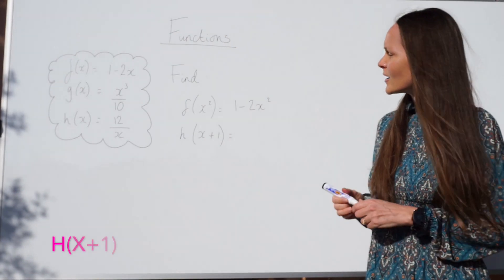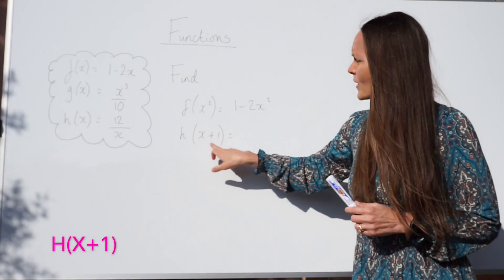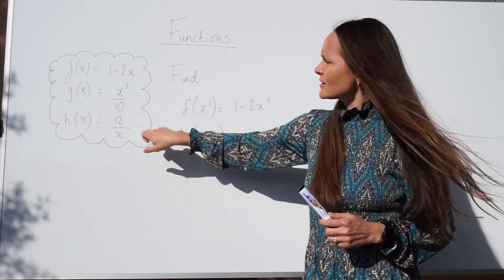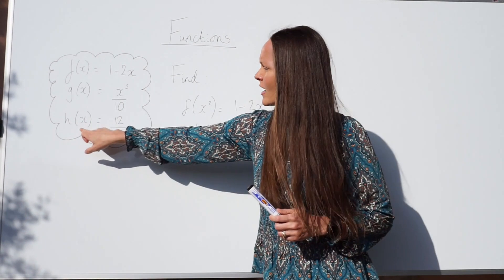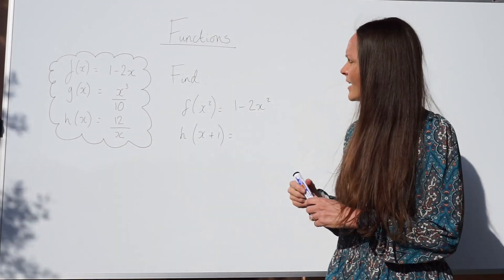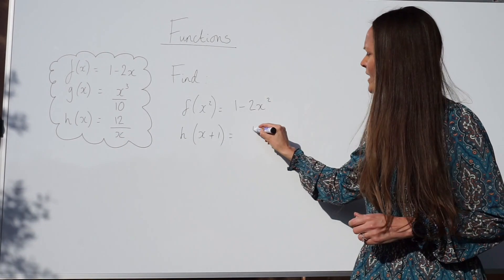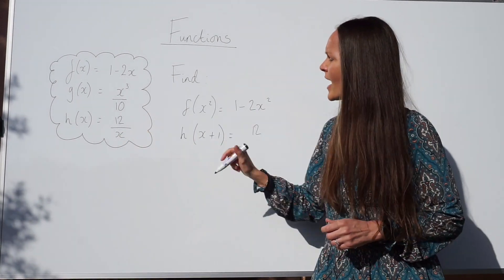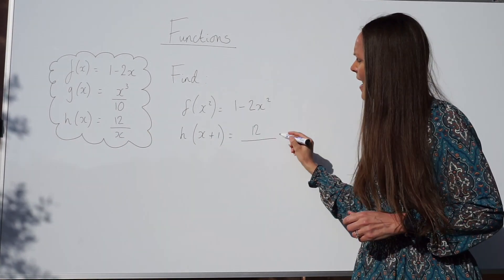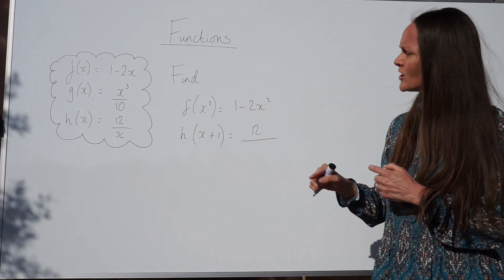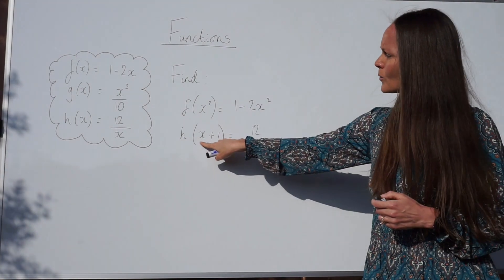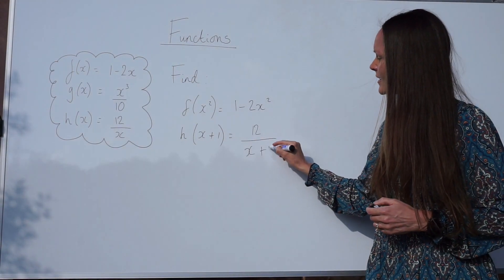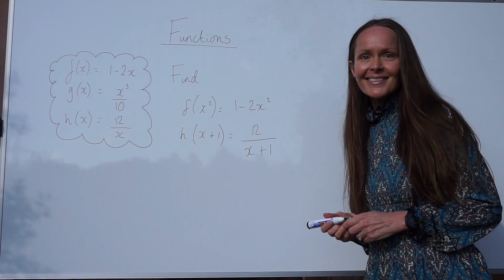For the next one, h of x plus 1 — so we're using the function h of x. When you write out 12 over x, the x just changes to what's inside the brackets, which is x plus 1. So the answer is 12 over x plus 1. And that's it.